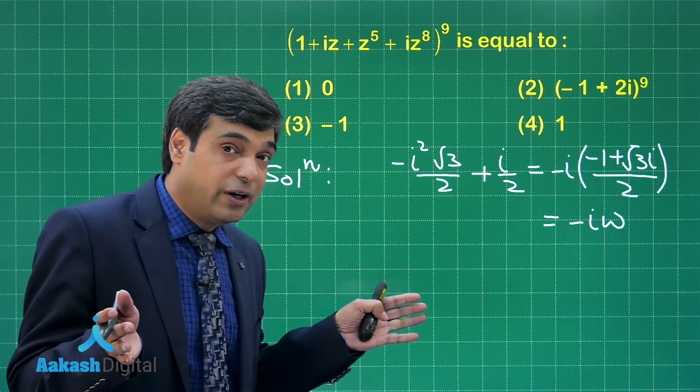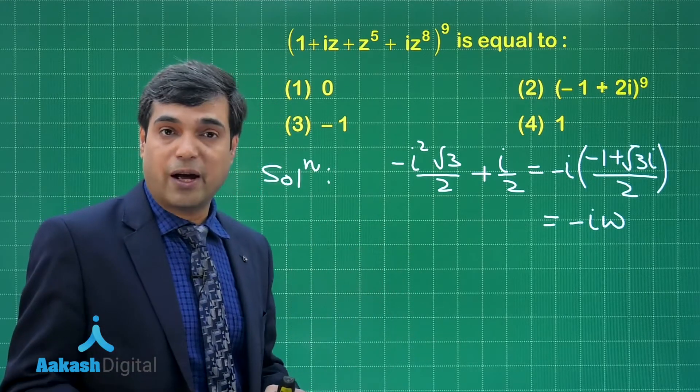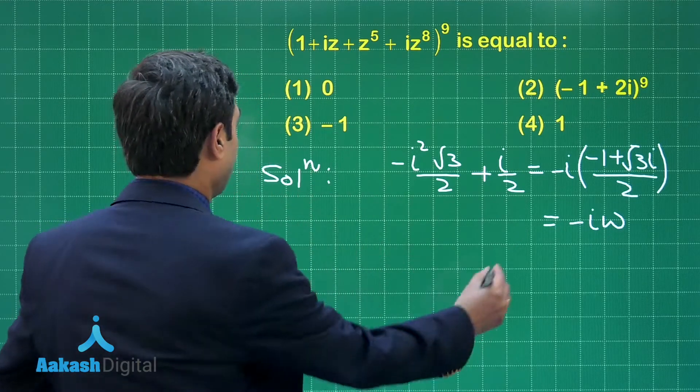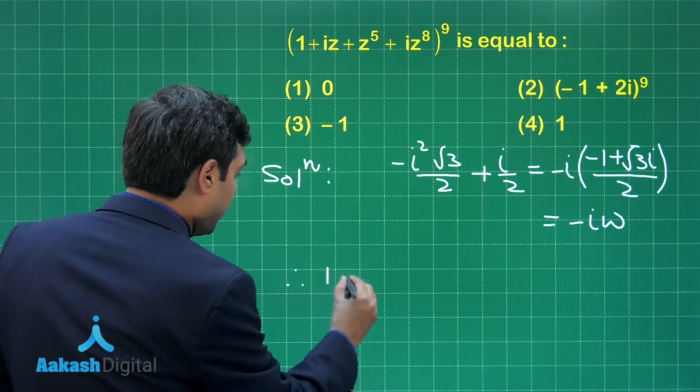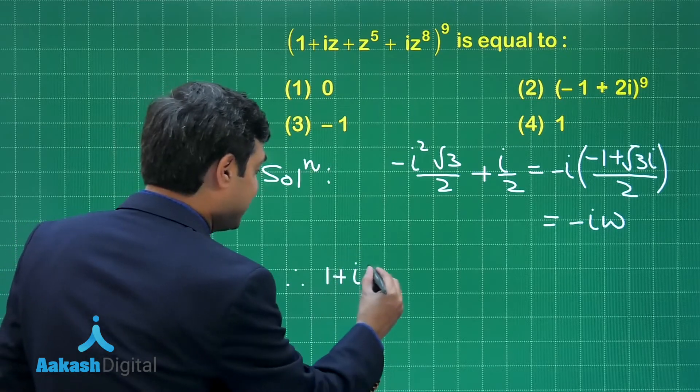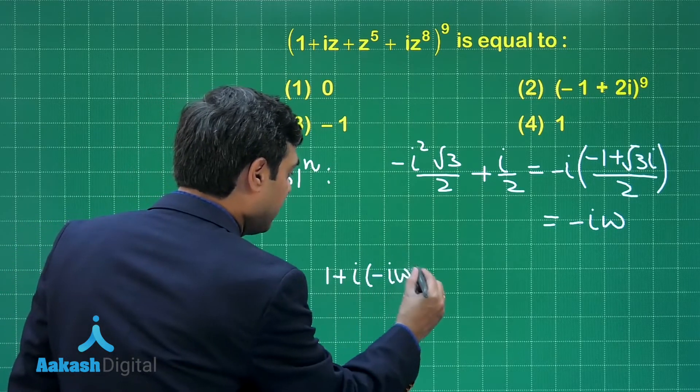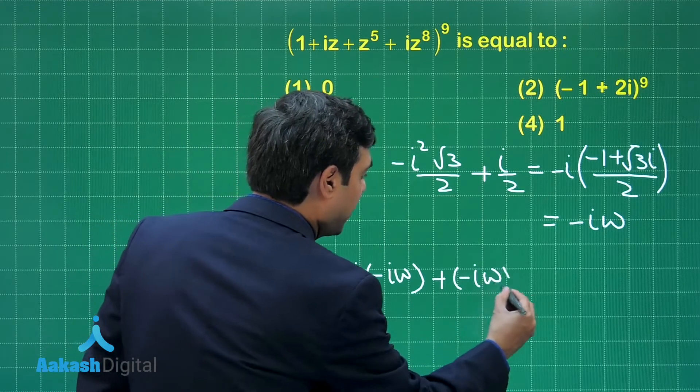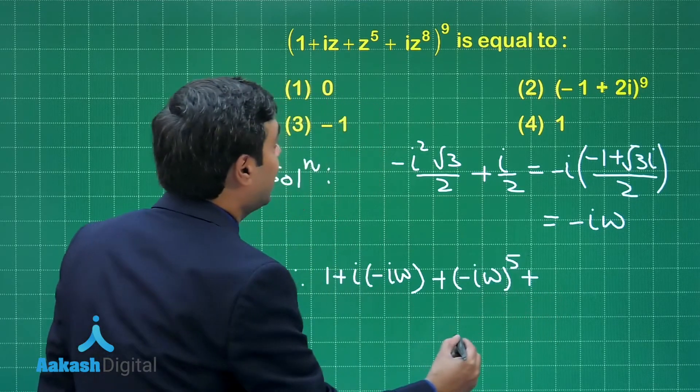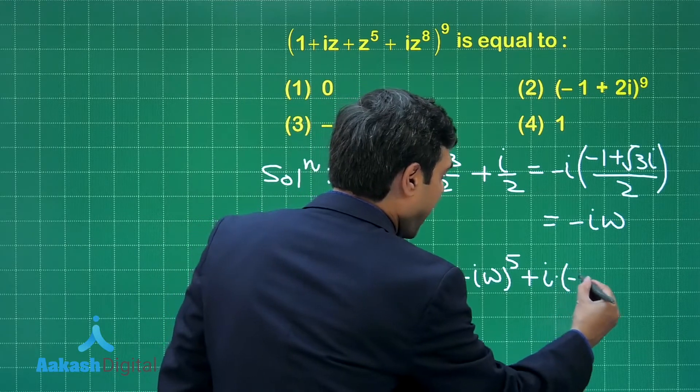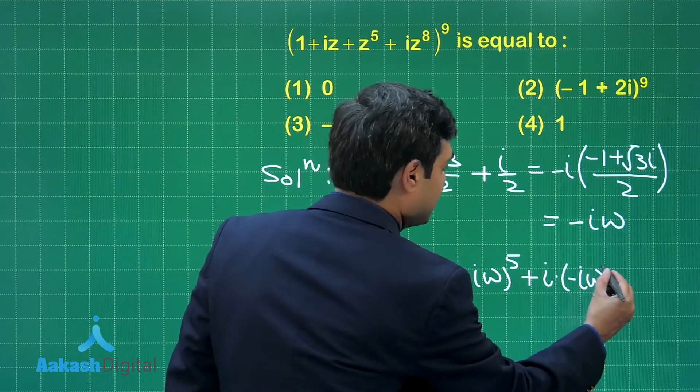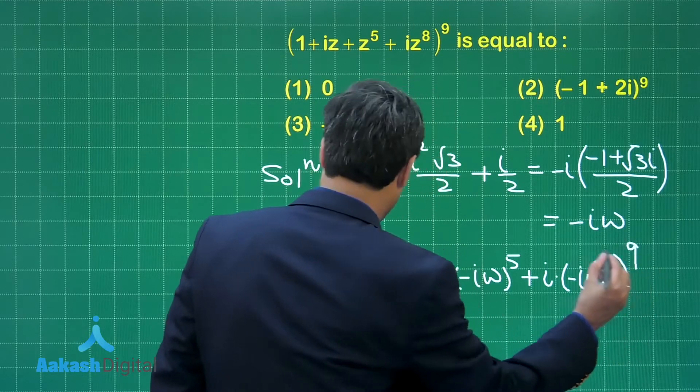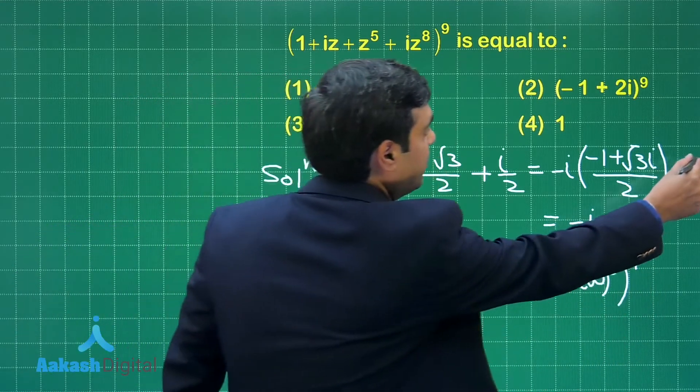Where omega is cube root of unity. What is the benefit for taking omega? We know that ω³ = 1 and 1 + ω + ω² = 0. Now therefore 1 + iz, z means -iω, plus (-iω)⁵ plus i(-iω)⁸, whole expression raise to the power 9.